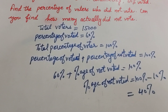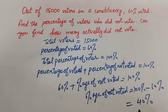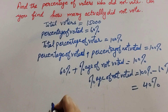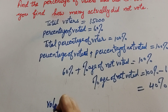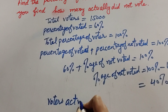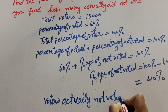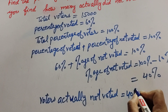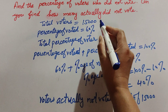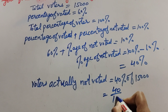Percentage of not voted equals 100% minus 60%, which is 40%. So 40% of voters did not vote. Now we find the number of voters who actually did not vote. That equals 40% of 15,000, since total voters are 15,000 and 40% did not vote.